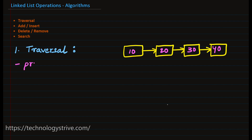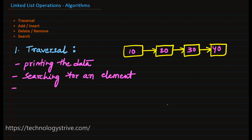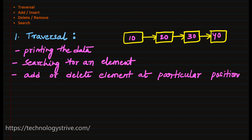Traversal is used in many cases like printing the data and searching for an element. Search is also one operation, but inside search we are going to use the traversal algorithm. If you want to add an element at a particular position, again we have to traverse till that node. So traversal is mostly used in cases like adding or deleting an element at a particular position. To understand the traversal algorithm more clearly, let's assume that we want to print the content of the linked list.